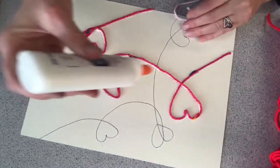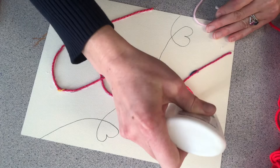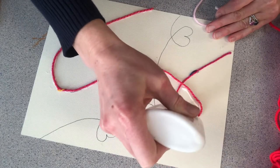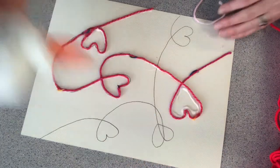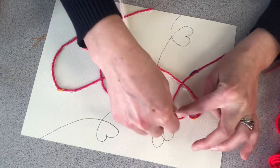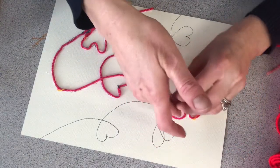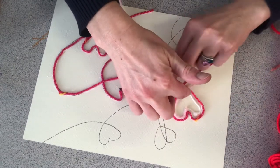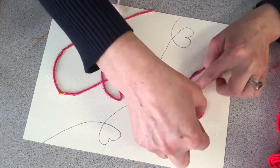What I can do is I can do a nice little outline of the heart inside of the heart, and then I can go around and attach the yarn to the glue.